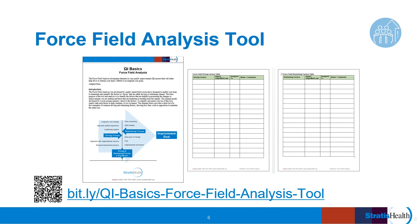You can find these factors in the force field analysis tool included in the templates and tools section of the QI Basics course webpage, or through the QR code and link on this slide. There's a separate table in the tool for both the driving and restraining factors that you'll identify. You can rank each factor as having high, medium, or low impact, and consider how to address restraining forces or leverage driving forces to achieve your desired change. By listing the driving and restraining factors and giving them some rank or weighting, your team can discuss if and how they'll impact your progress. Not all factors may be at play when you start your small tests of change, but you'll be ready with a plan if they come up.